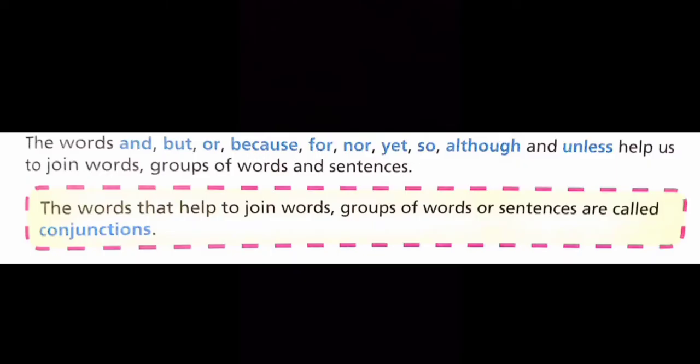The words and, but, or, because, for, not, yet, so, although, and unless help us to join words, groups of words, and sentences. The words that help to join words, groups of words, or sentences are called conjunctions.